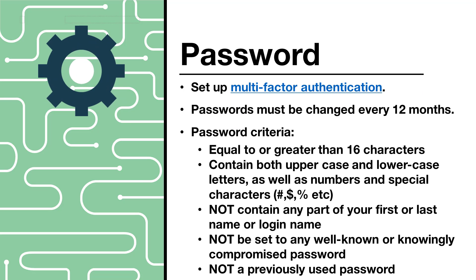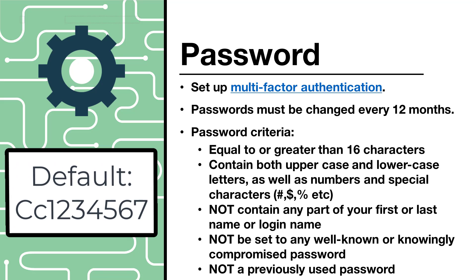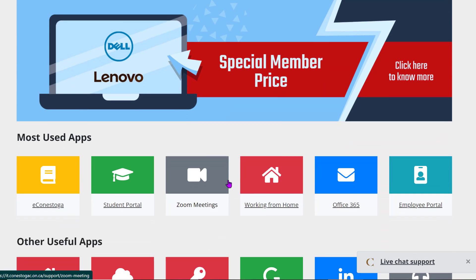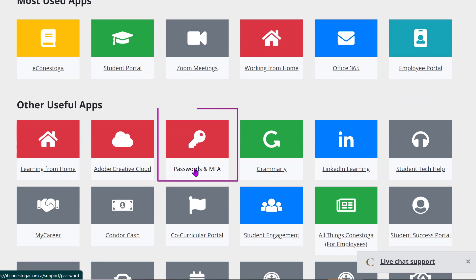Your password. By default, your password is set to capital C, lowercase c, and your seven-digit student ID number. Please change this at your earliest convenience so that your account remains private and secure. Your password is set to expire every 12 months. Consider setting up multi-factor authentication. This will add an extra layer of security and will help reset your account if you get locked out for any reason. You can set up your MFA by navigating to the Conestoga IT homepage, clicking on Passwords and MFA, and then going through the setup instructions.